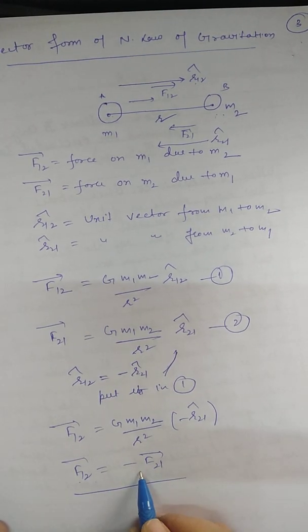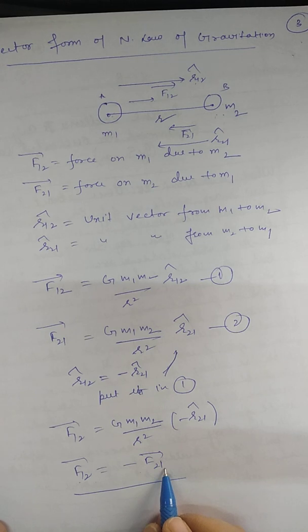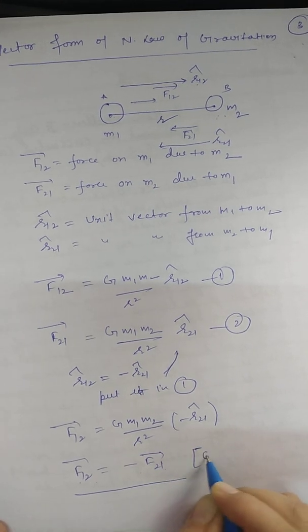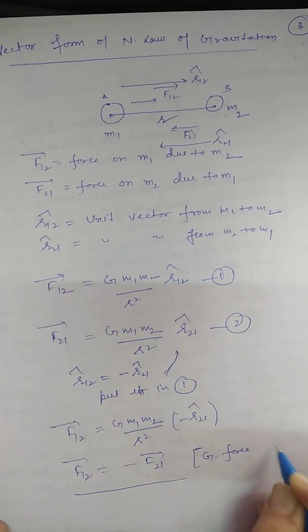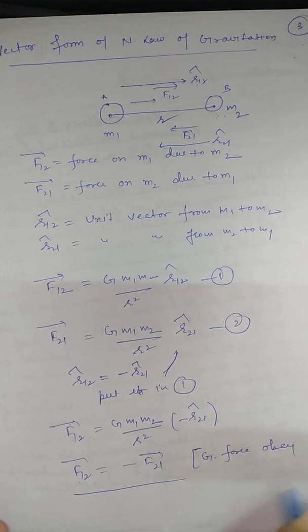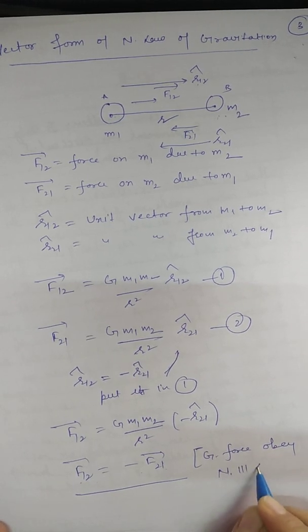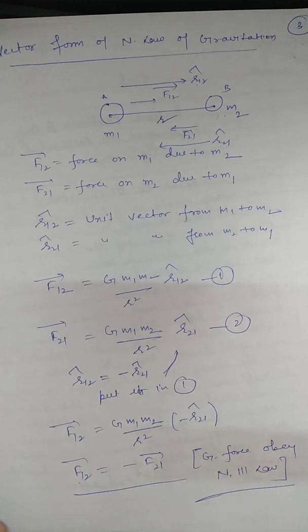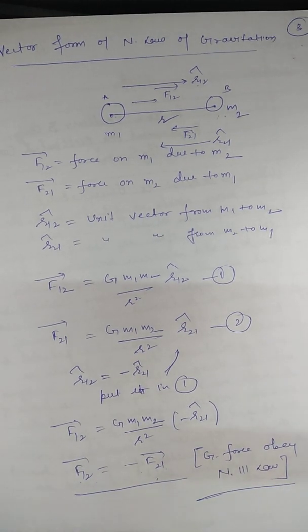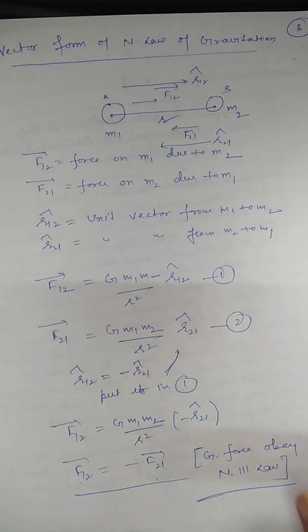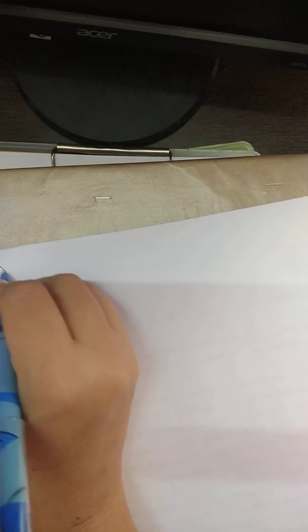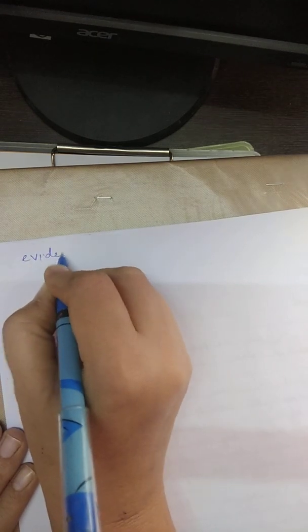What does it mean? It means the force on one due to second is equal and opposite to force on second due to one. This means the gravitational force obeys Newton's third law. Now students, what are the evidences which show there is gravitational force?